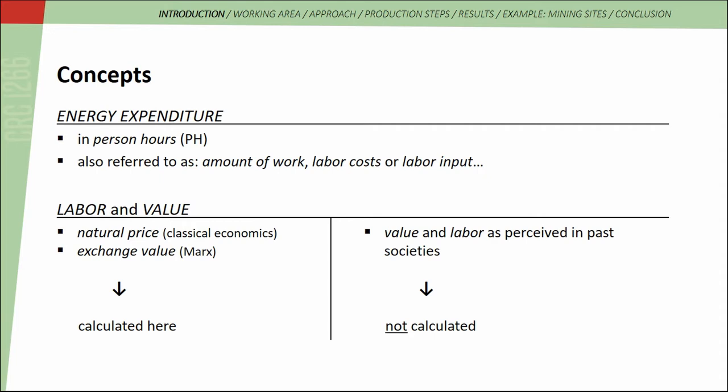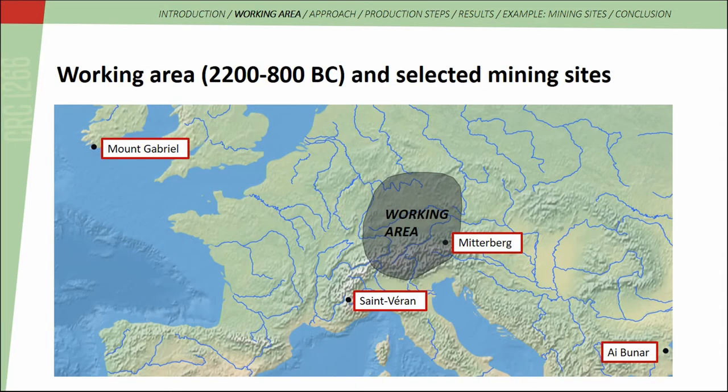This cannot be answered using archaeological methods. My working area encompasses central and southern Germany as well as parts of the Austrian, Swiss, and Italian Alps where archaeological evidence for primary and secondary metallurgy exists. My working period is the Central European Bronze Age between 2200 and 800 BC. On the map, selected mining sites are indicated which will be considered later in my talk. The following remarks refer to the working area only unless stated otherwise.